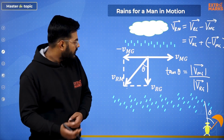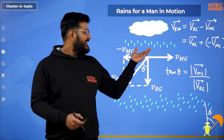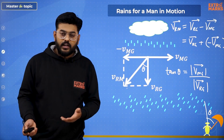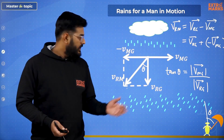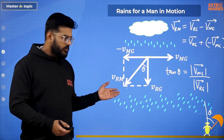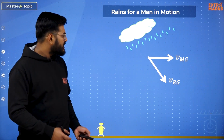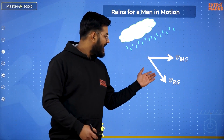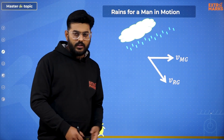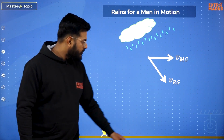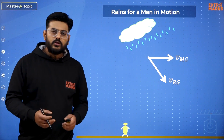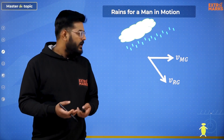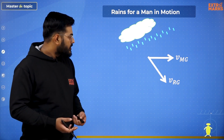Now let's alter some situations. Initially, we considered that the rains were falling downward, but they aren't always like that. Because of the effect of wind, they can fall in this direction or that direction. So we'll be considering both cases. Let's take this case wherein the rains are falling somewhat like this — not vertically downward, but now with an angle with the horizontal and even with the vertical. Suppose this man is moving in the forward direction; then what should be the orientation of the umbrella? We just need to find the value of velocity of rain with respect to man.